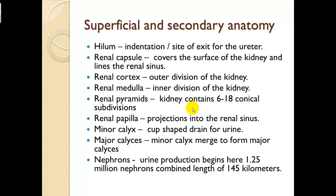Superficial and secondary anatomy — these are mostly terms. The hilum, or indentation, is the site of exit for the ureters. The renal capsule covers the surface of the kidney and lines the renal sinus. The renal cortex is the outer division of the kidney; the renal medulla is the inner division. The kidneys contain 6 to 18 conical subdivisions called renal pyramids. The renal papilla are projections into the renal sinus. Minor calyxes are cup-shaped drains for urine; minor calyxes merge to form major calyxes, where filtrate is put into the ureter.